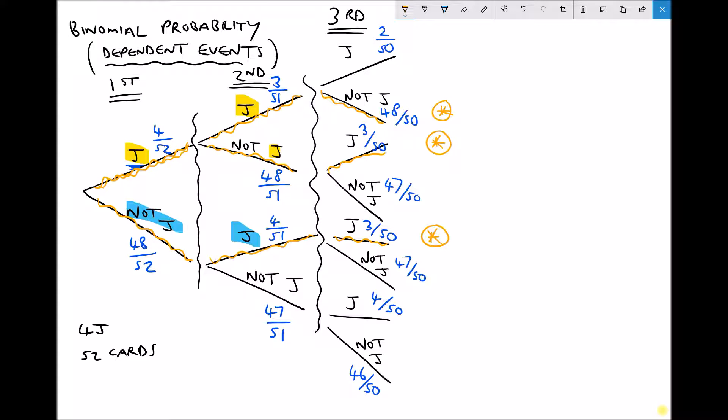So as in the previous example, we're going to multiply along the branches and then add those three numbers together. We have 4 in 52 times 3 in 51 times 48 in 50. That's the probability of getting a non-jack on the second card times 3 fiftieths. And finally we have 48 on 52 times the probability of getting a jack on the second card times the probability of getting a jack on the third card.